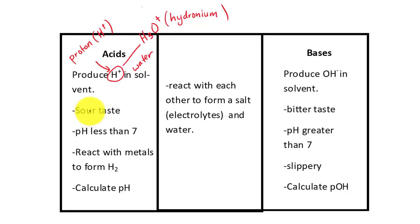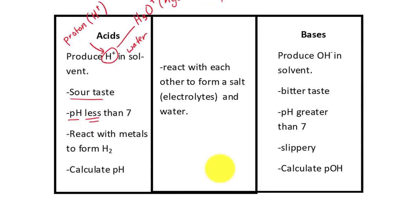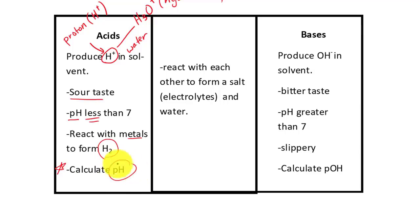Another characteristic of an acid is that it has a sour taste — think of lemon juice and vinegar, those are examples of acids. On a pH scale, an acidic solution would have a pH less than seven. And when it reacts with metal, it would form hydrogen gas. When you have a solution made from dissolving an acid, we have to calculate pH first.